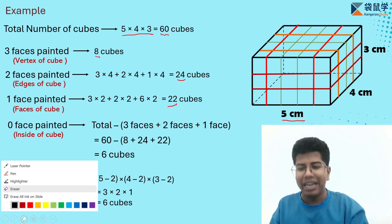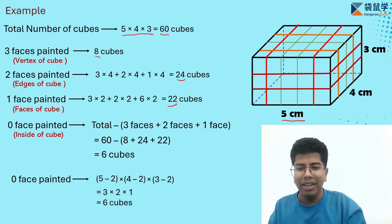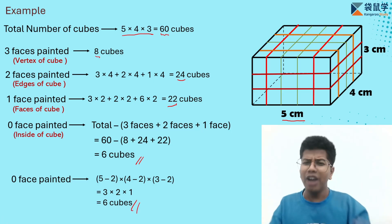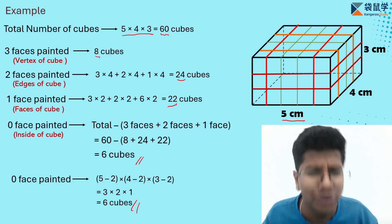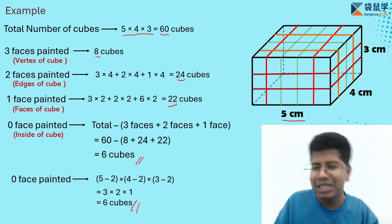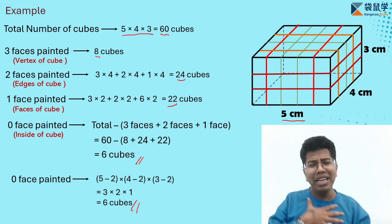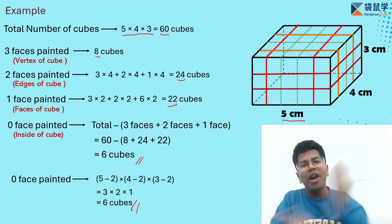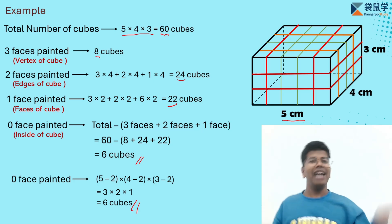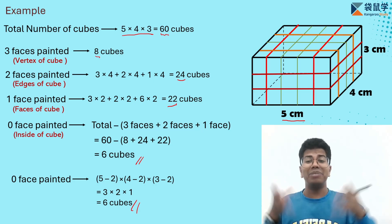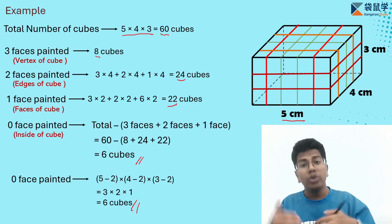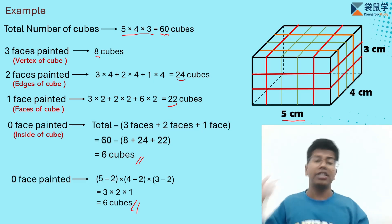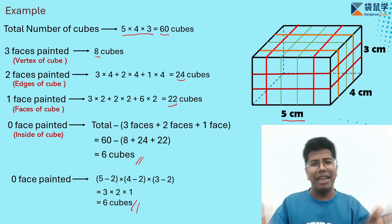Both methods give 6 cubes. The second method is more suitable because you simply cut the cuboid from front and back, left and right, top and bottom to get 0 faces painted directly. The first method requires calculating total cubes, 3 faces, 2 faces, and 1 face — which is quite challenging.